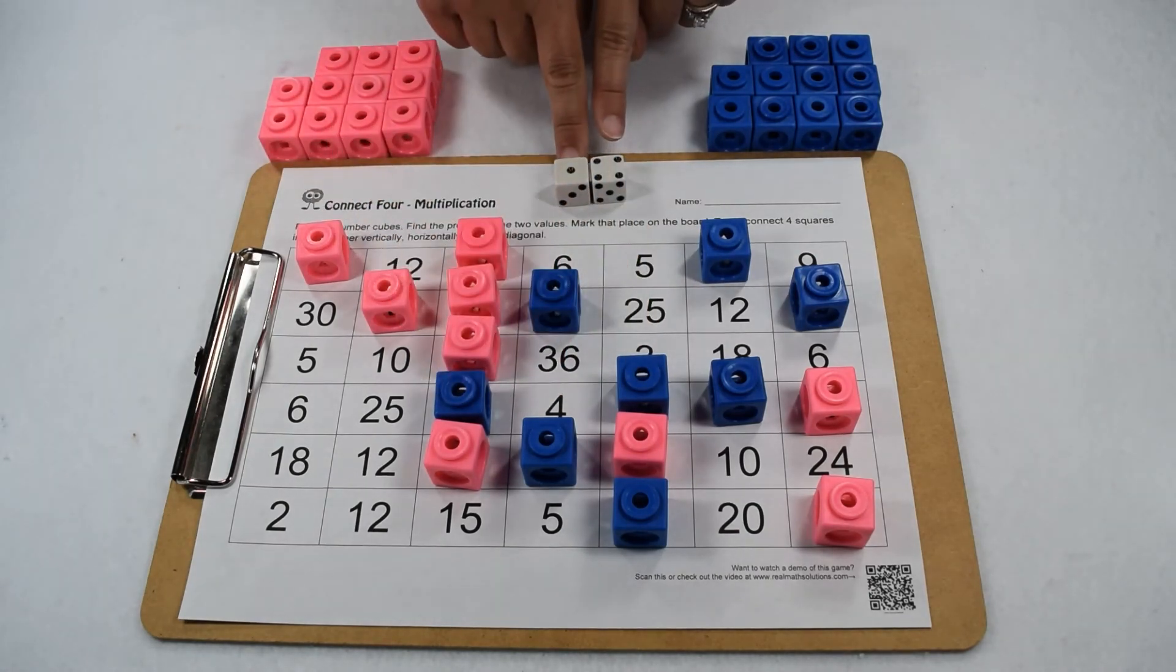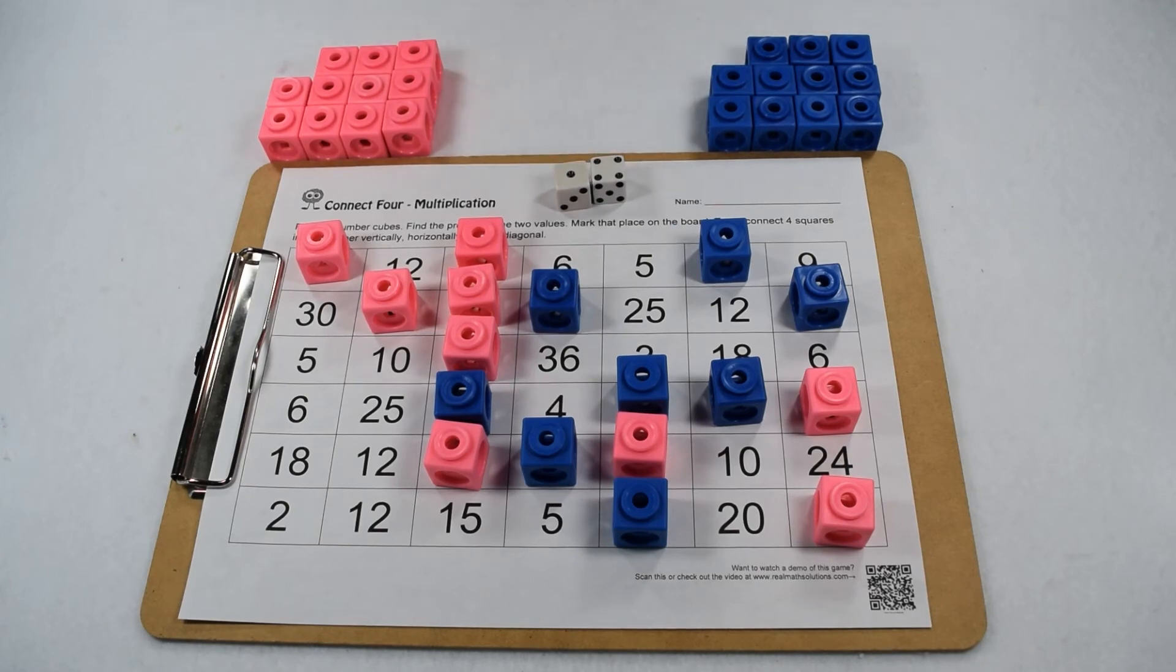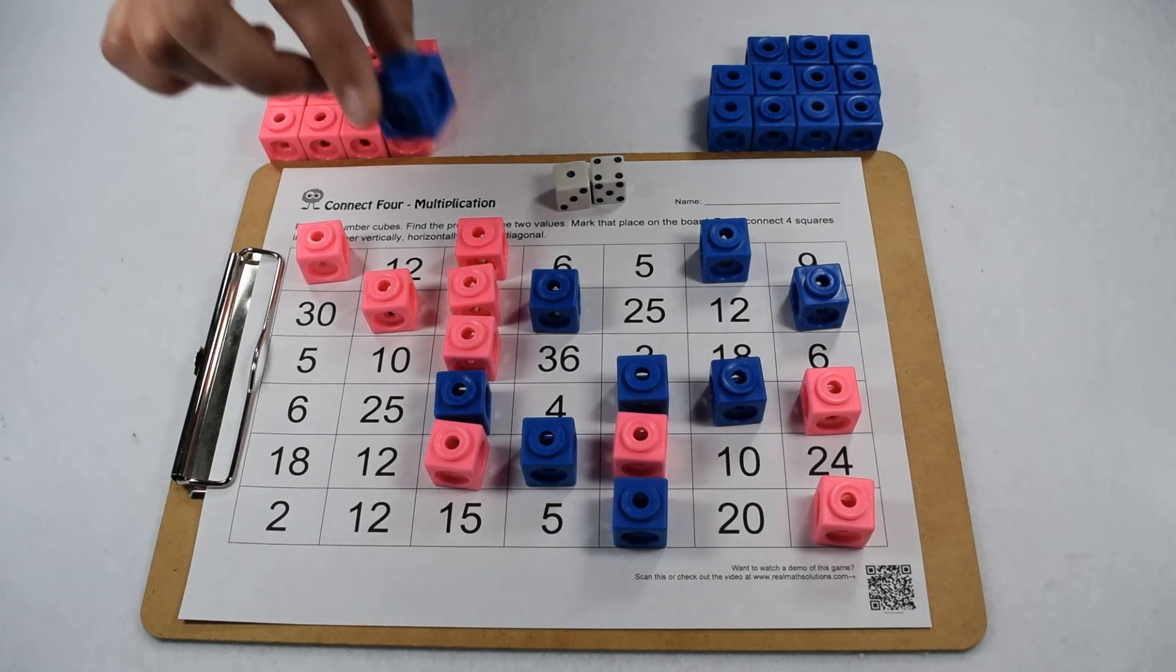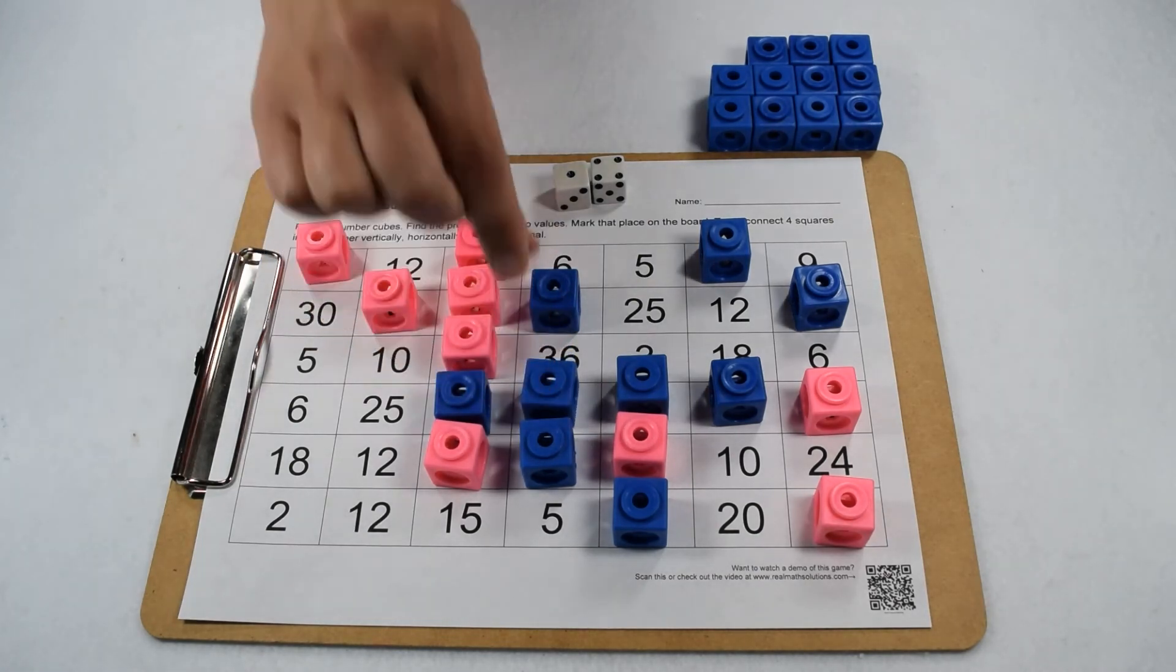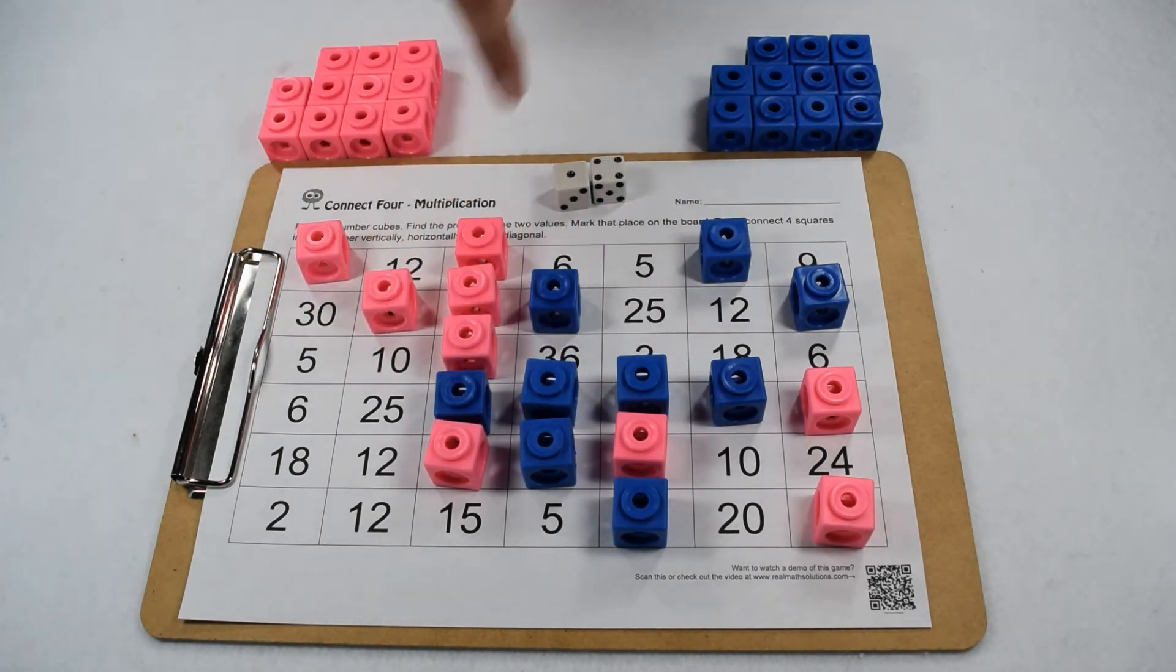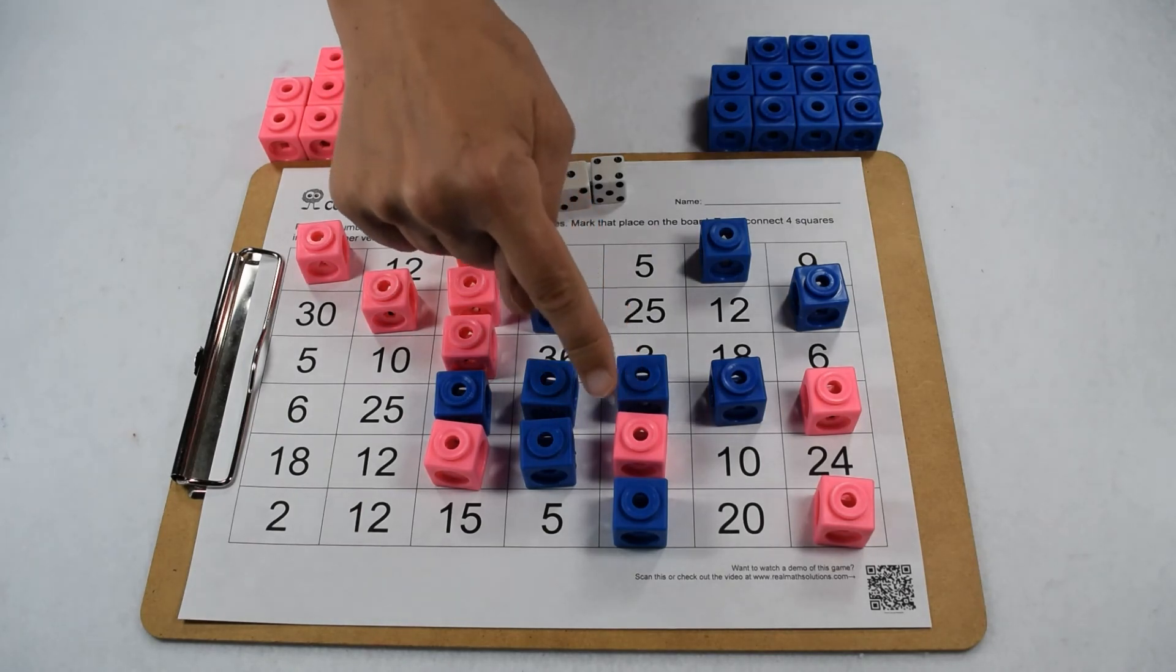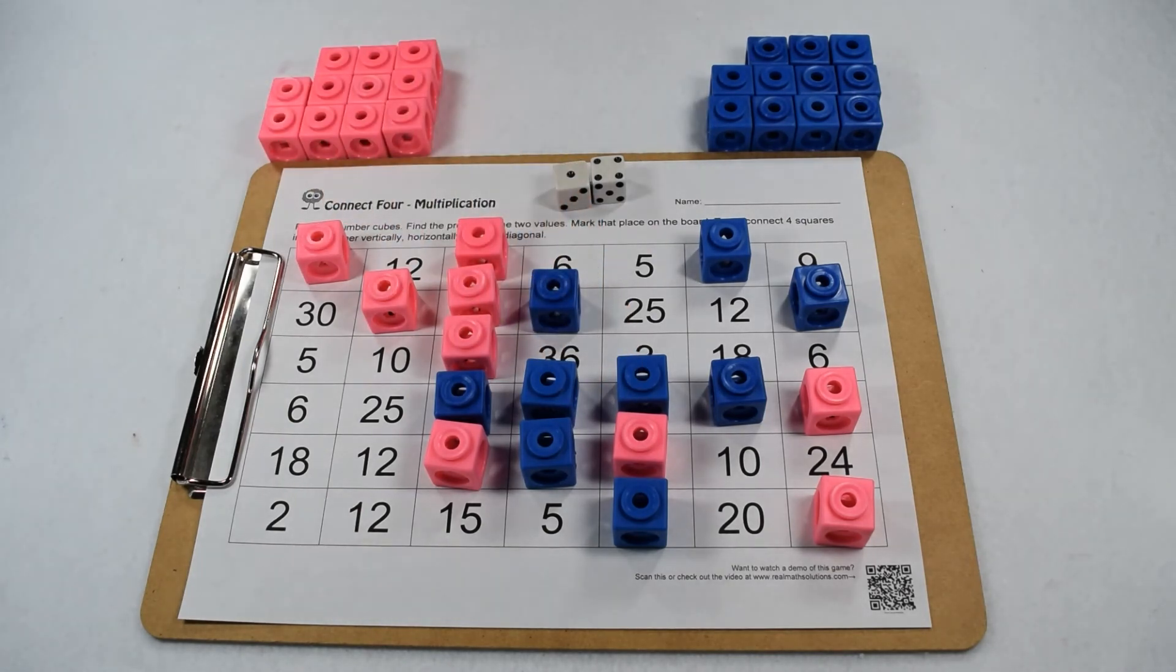We can see on our dice that somebody has rolled the one times four. One times four is four, so somebody's going to get that critical spot. It's our blue player's turn, so they get to put their piece there and they win because they got four in a row horizontally and blocked the four in the row diagonally for the pink player.